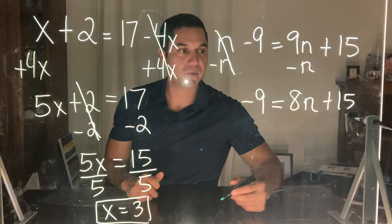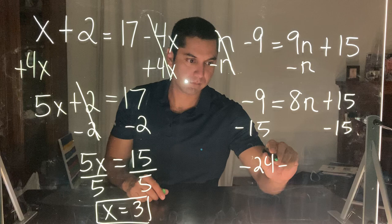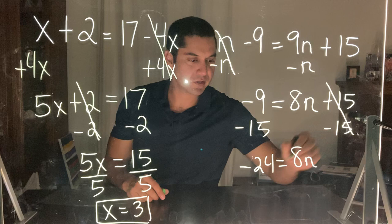Here again, down to a two-step equation. I just subtract 15 from both sides. Negative 9 minus 15 is going to give me a negative 24. Bring down my 8n. The 15's cancel each other out.